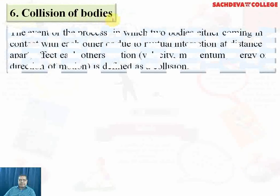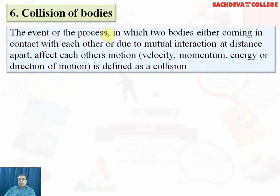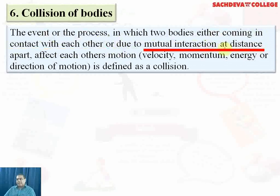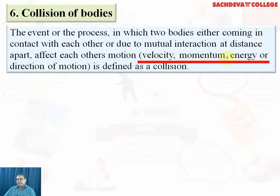Now we come towards the collision of bodies. The term collision refers to the event or process when two bodies come towards each other and collide. After colliding, either they stick together or they move away from each other. Collision is defined as the event or process in which two bodies either come in contact with each other, or due to mutual interaction at a distance, affect each other's motion — including their velocity, momentum, energy, or direction of motion.